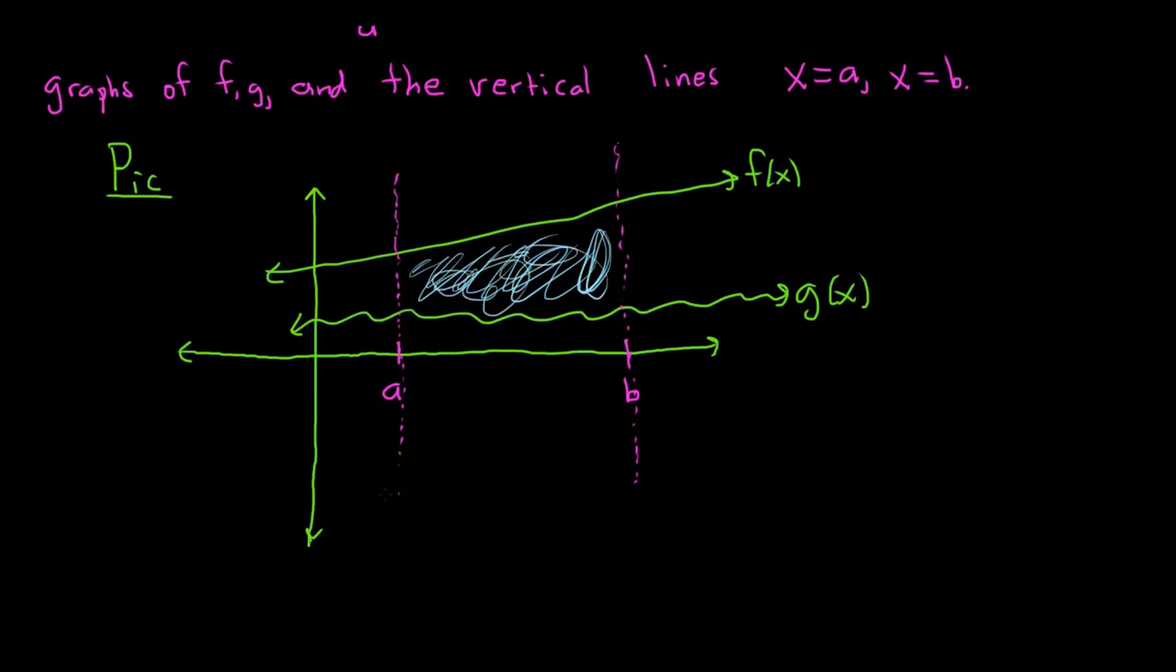So the idea is that you pick, you divide the interval into subintervals. And so you pick some xi in some subinterval. And what you do then is you draw a rectangle. This is our rectangle.